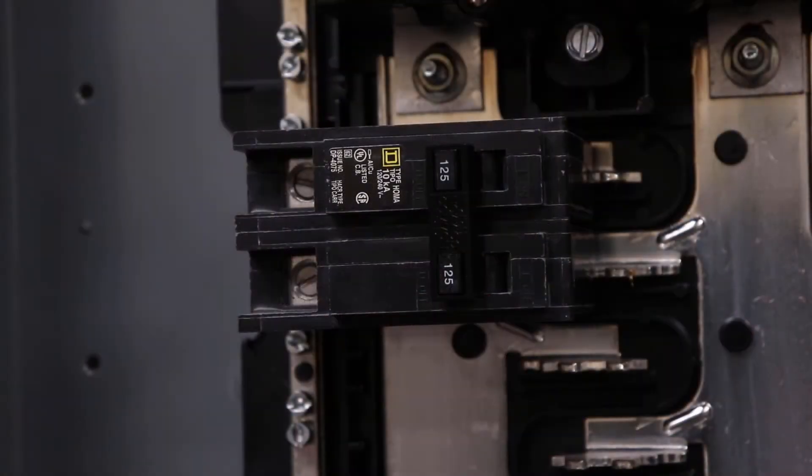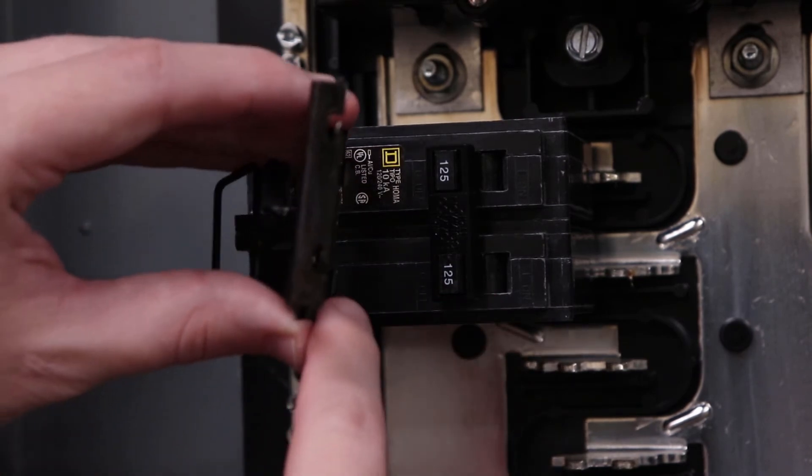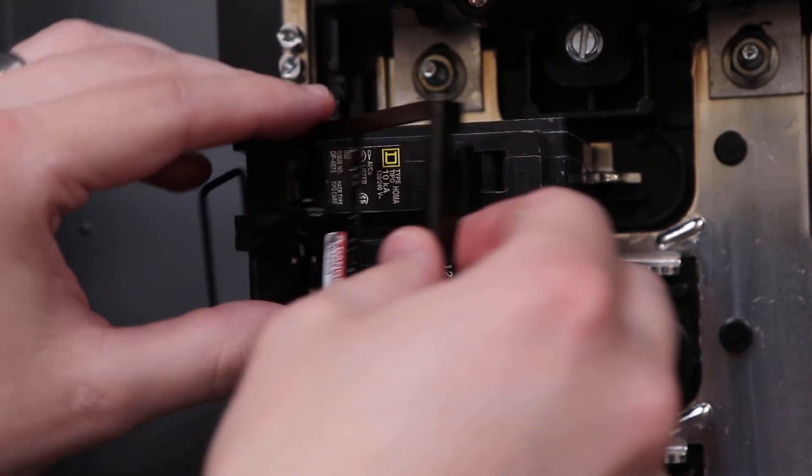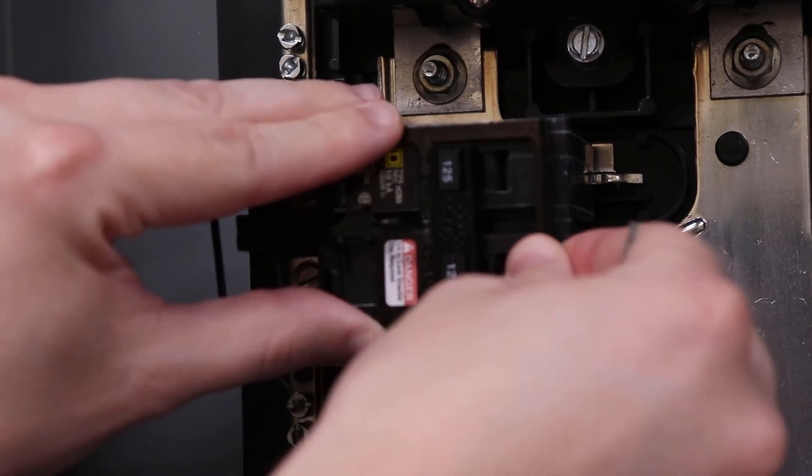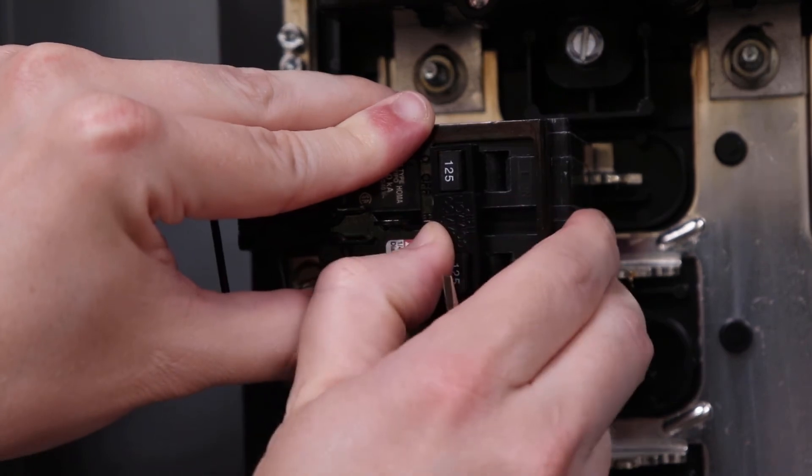First, make sure the breaker is in the off position. Then slide the tabs of the attachment into the slots on the off side of the breaker. Push it flush with the face of the breaker and turn the breaker on.